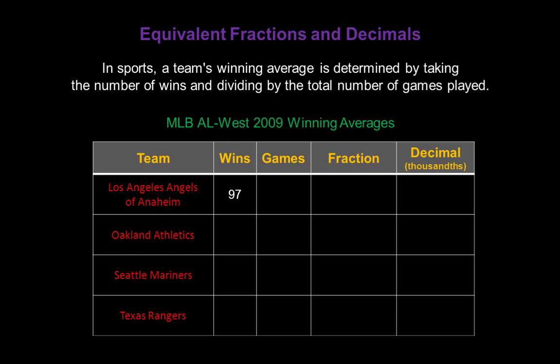That year, the Los Angeles Angels won 97 of their games. They played 162 games that year. So as a fraction, their winnings are 97 out of 162 total games — that's a division problem. 97 divided by 162 will give us a decimal. In sports we round winning averages to the nearest thousandth, so 97 divided by 162 gives us a decimal of 0.599.